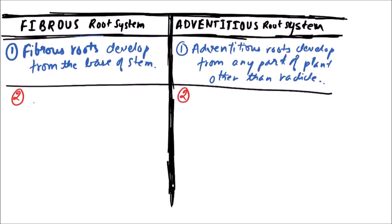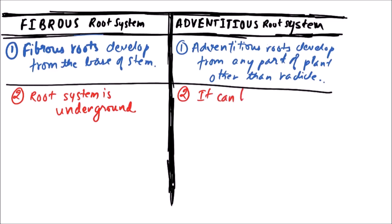The fibrous root system is underground, but in the case of the adventitious root system, because it can develop from any part of the plant, it can be underground or it can be above ground.